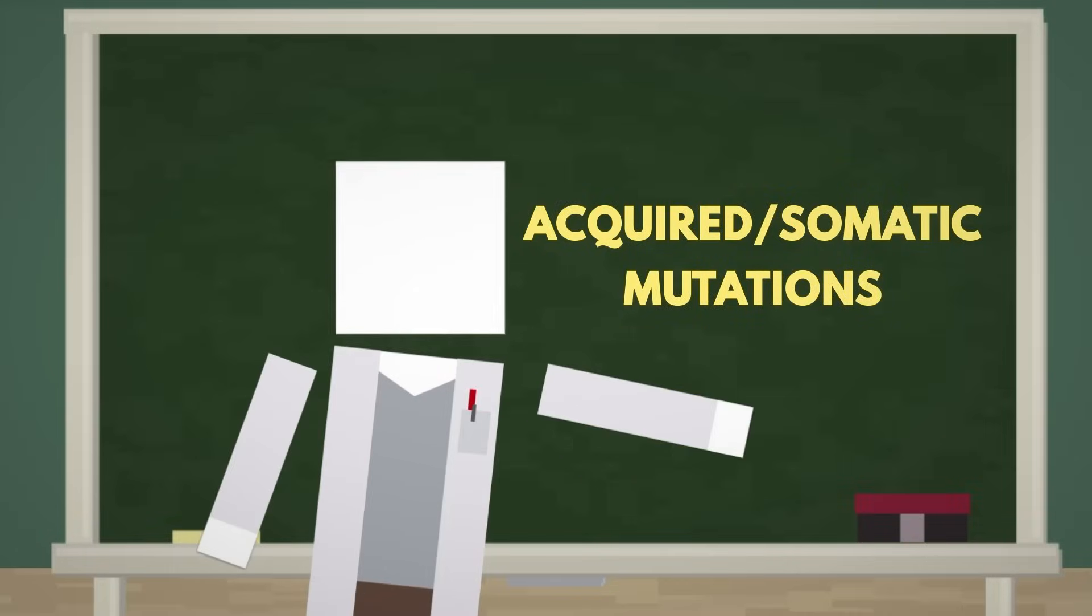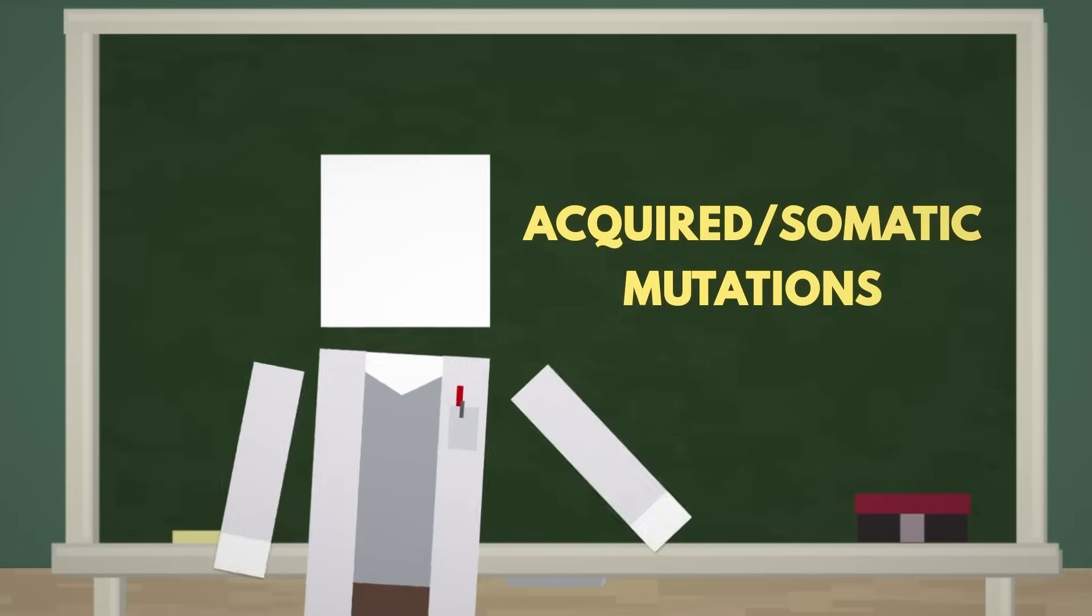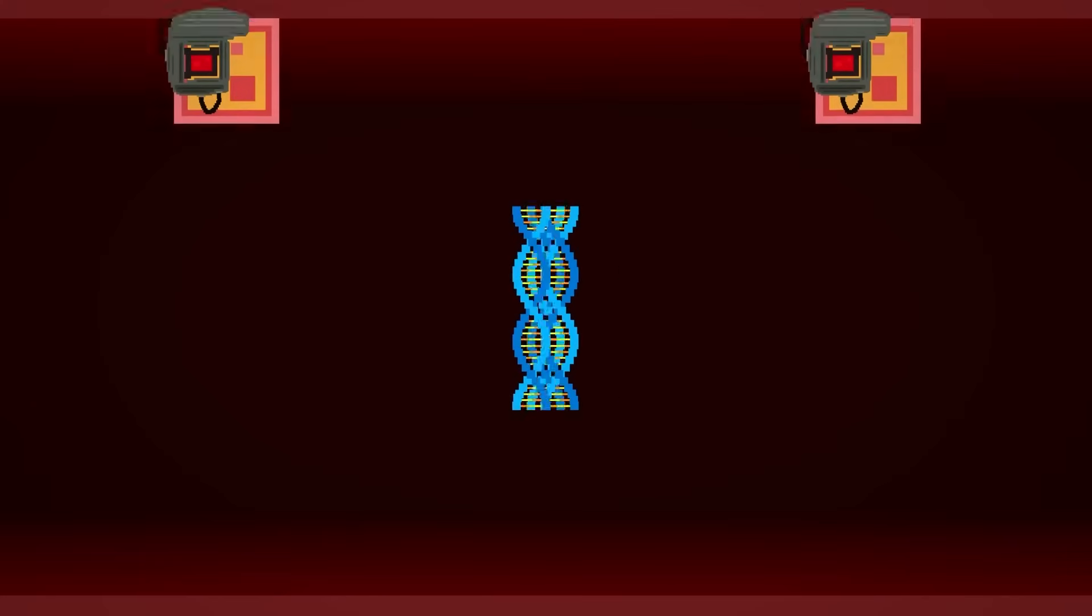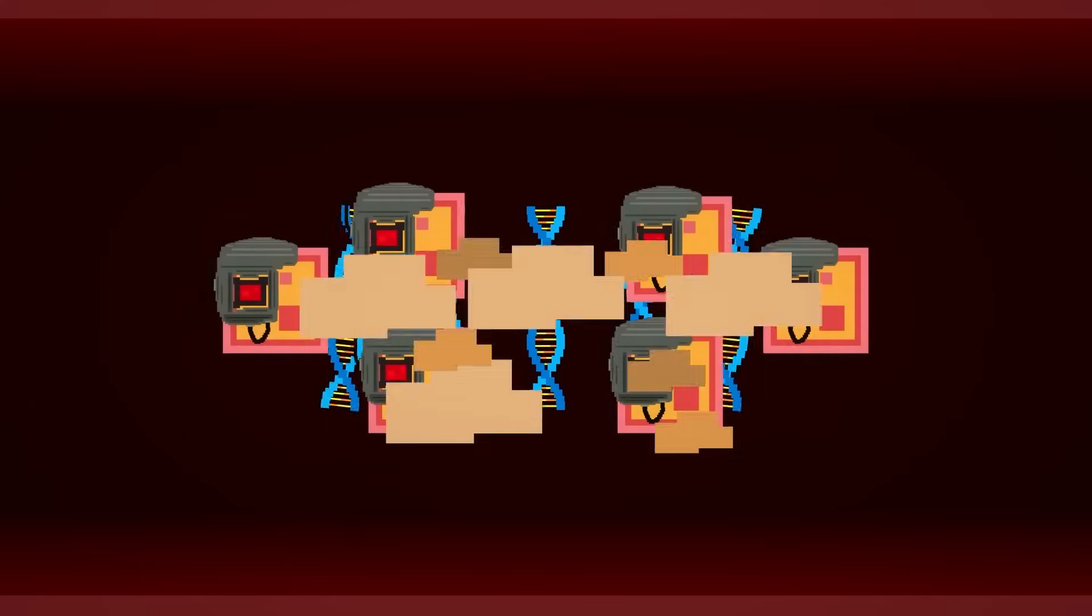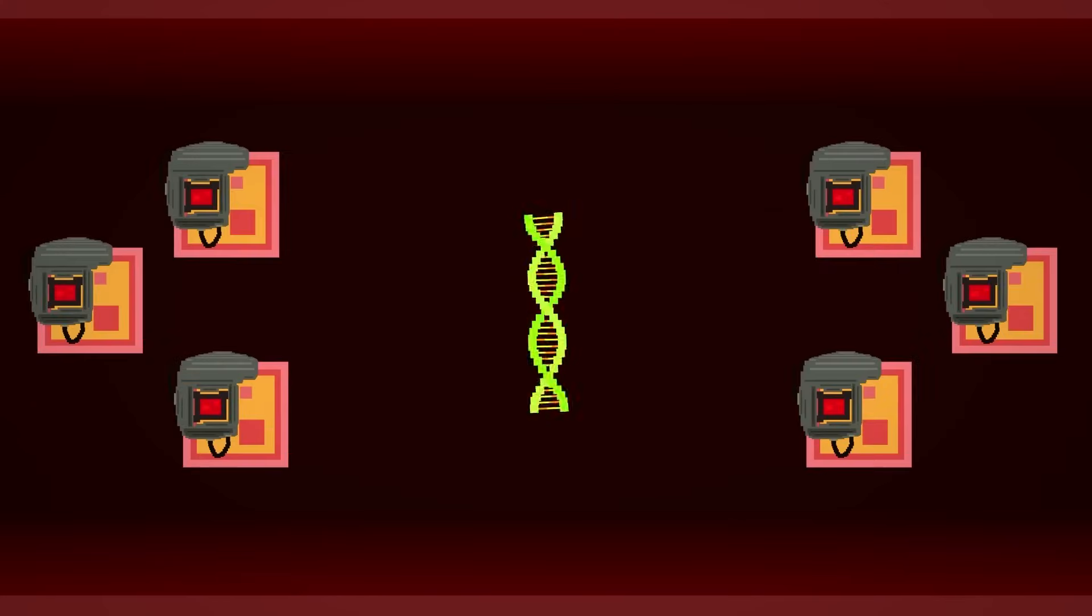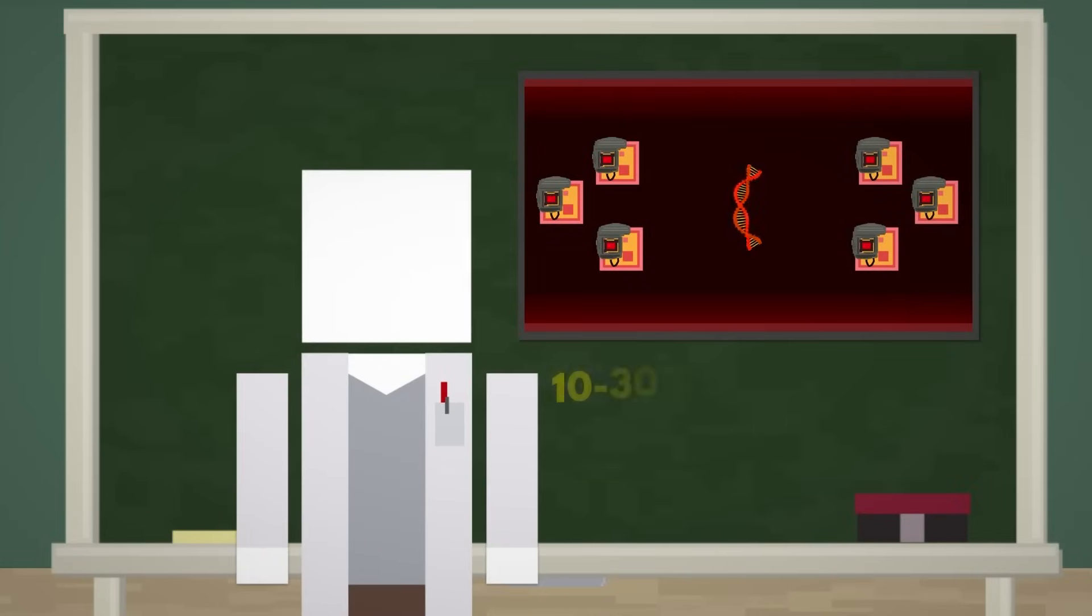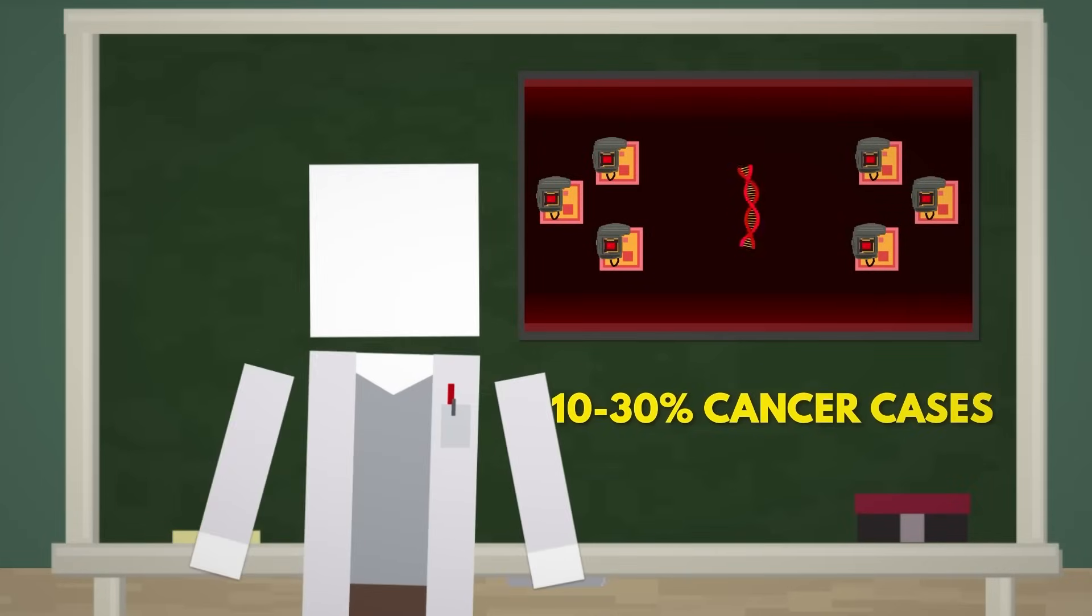The real party crashers are acquired or somatic mutations. These sneaky mutations can occur during DNA replication, adding an element of randomness into the mix. Studies suggest they can contribute to 10 to 30% of cancer cases.